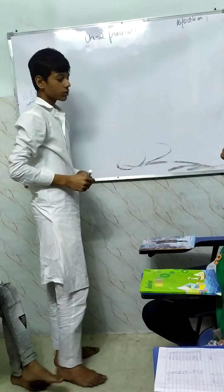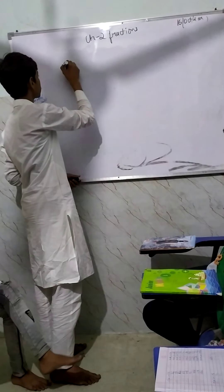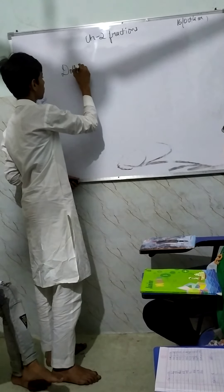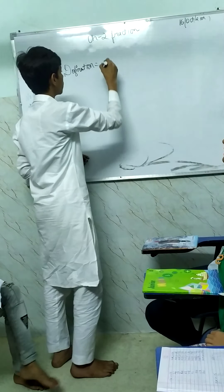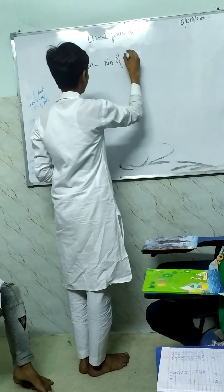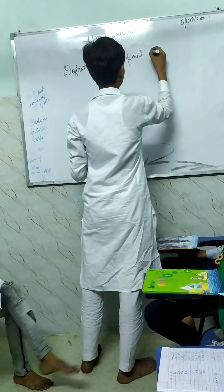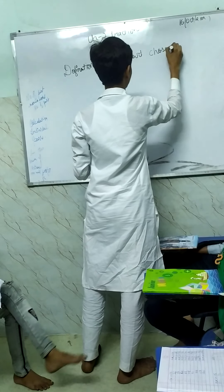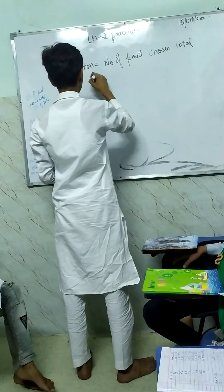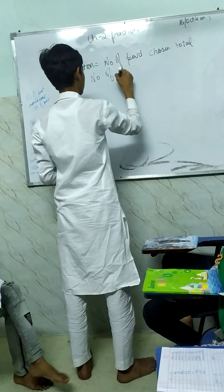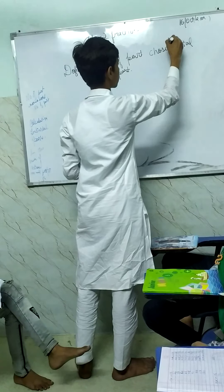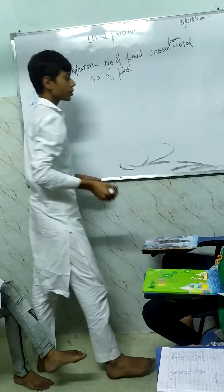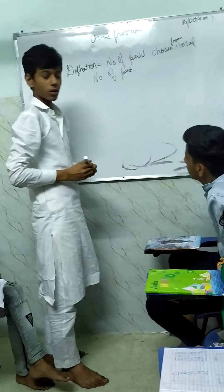What is the definition of a fraction? The definition of fractions is: number of parts chosen from total. This is the definition of fractions.